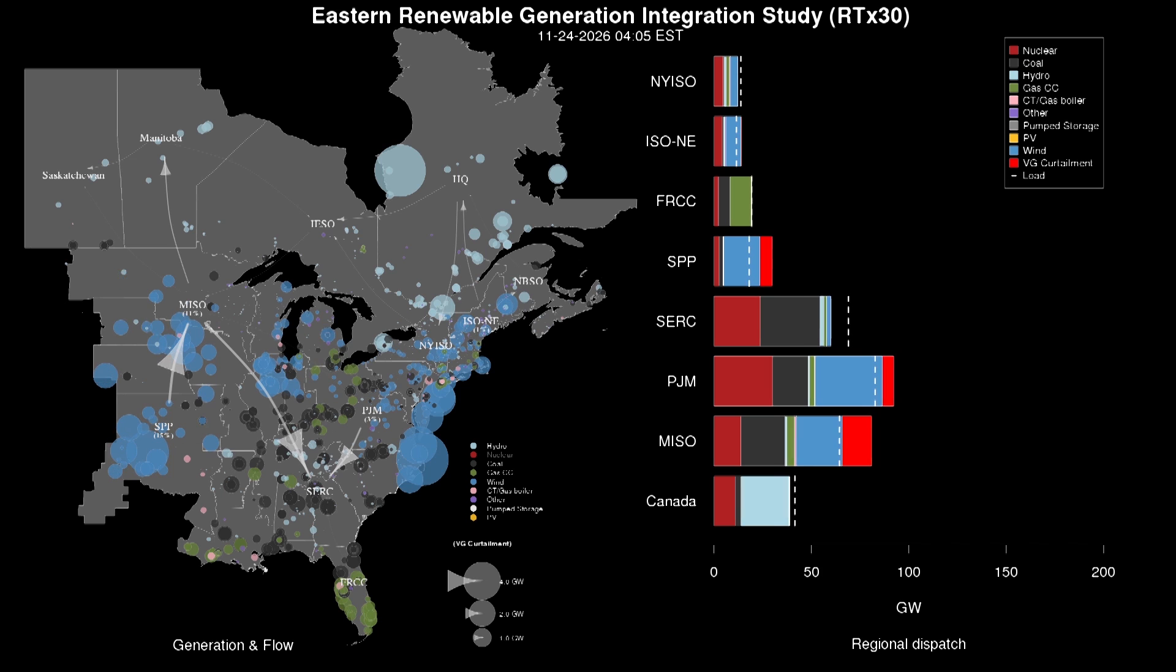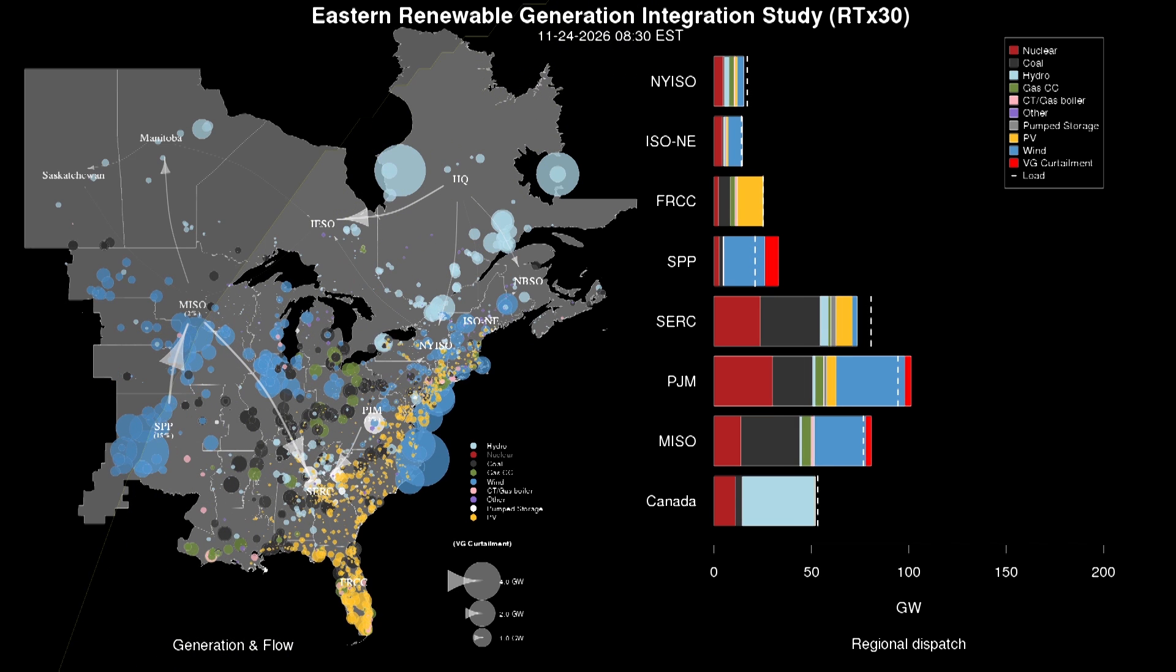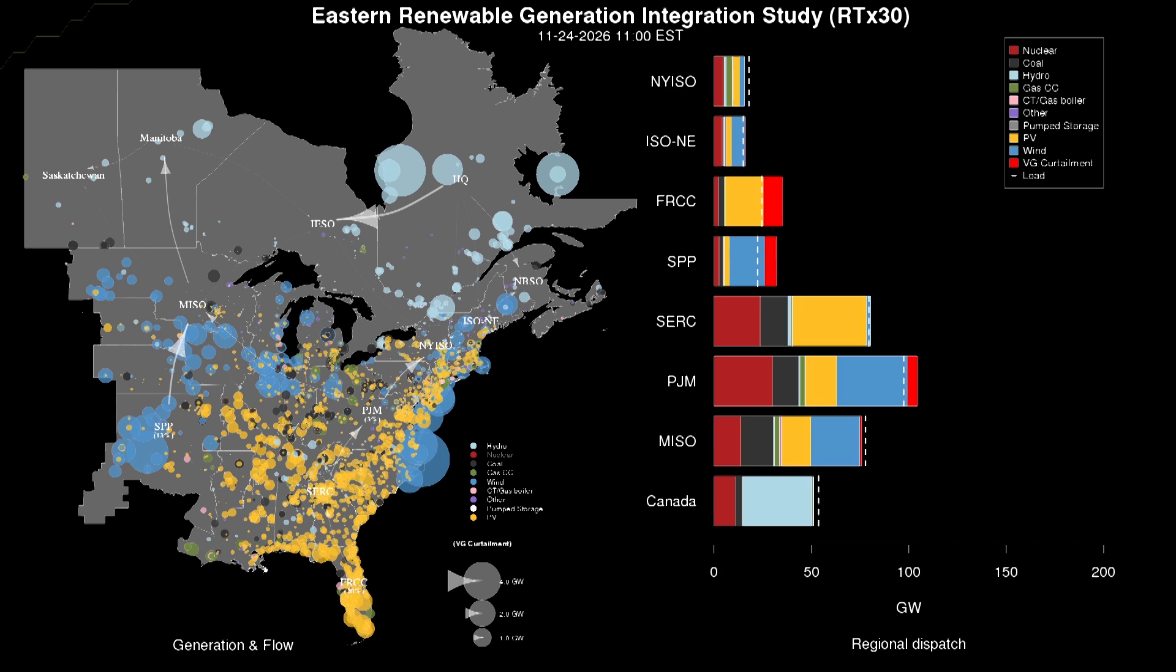Take a look what's happening here. It's late November and nearly 50% of the generation is from wind and solar PV. Load is low and we see high amounts of curtailment in the Great Plains until a forecast error unfolds.